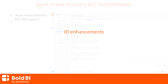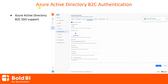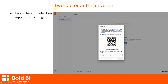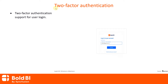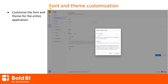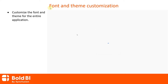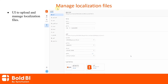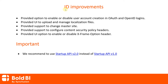Let's move on to the ID enhancements. We implemented Azure Active Directory B2C single sign-on authentication support for external providers. We also provided two-factor authentication support for user login. This adds an extra layer of security to the user account, providing stronger protection against unauthorized access. Users can now customize the font and theme for the entire application, as well as dashboards. We have also provided a UI to upload and manage localization files. These are the ID improvements we have made. Notably, Startup API version 1.0 is obsolete in Bold BI version 5.3 and its usage is no longer recommended. This API will be removed in the upcoming release, and we recommend you use Startup API version 2.0 instead.